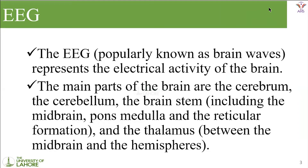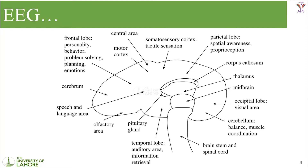The main parts of the brain are the cerebrum, the brainstem, and the thalamus. The thalamus is present between the midbrain and the hemispheres. As we know, our brain is divided into two longitudinal hemispheres. Here is a diagram of the brain which explains the different parts and different functions of the brain.